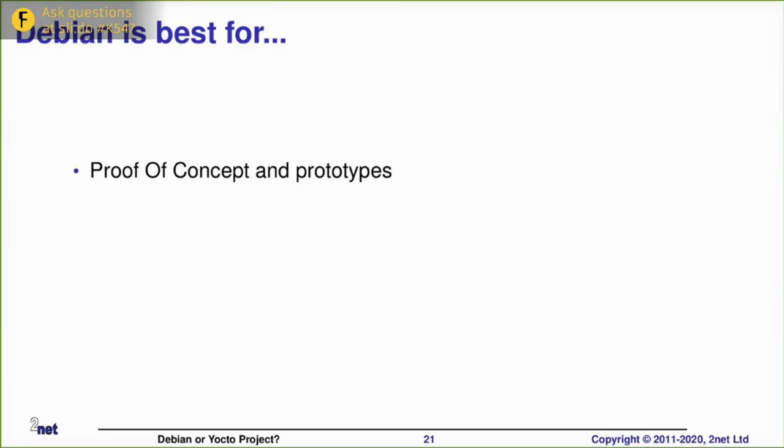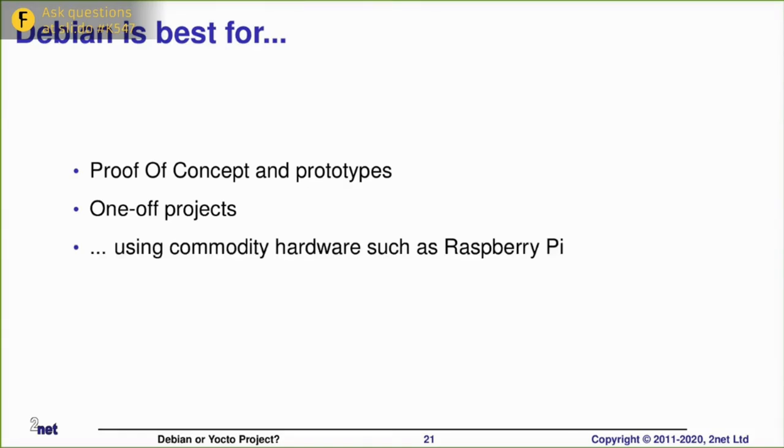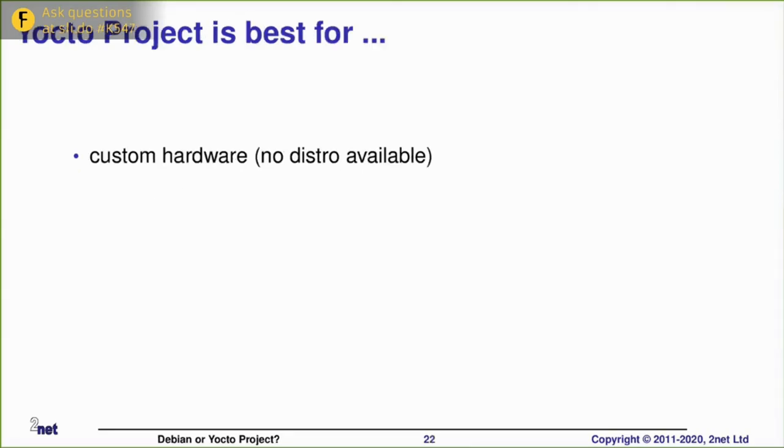Okay, so that's the two alternatives. Debian or similar distro versus building from scratch using Open Embedded and Yocto project. Now I want to try and build some conclusions from all of that. I would like to say then that for Debian, the real advantage from Debian really is that you can build the system and have it up and running very, very quickly. So Debian is great for proof of concept. It's great for prototypes. It's great for one-off projects where you're not going to be distributing huge numbers of them. And it's also great if you're using commodity hardware such as Raspberry Pis, Beagle Bones, Beagle Boards, etc.